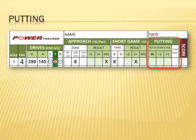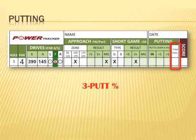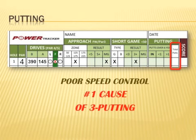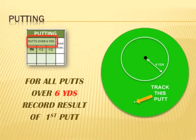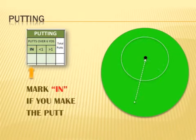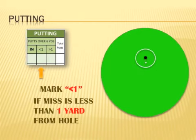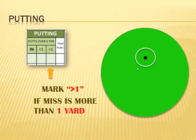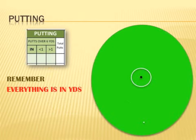Now let's power track our putting. When power tracking you will record total putts so you will know your average putts per round and your 3-putt frequency. The biggest impact putting has on your score is 3-putting, and one of the main causes is poor speed control on long putts. To evaluate speed control, you will track your performance on all putts longer than 6 yards. Mark the in box if you make it, the less-than-1 box if your ball misses but stops less than 1 yard from the hole, or the greater-than-1 box if your ball misses and stops further than 1 yard from the hole. Remember, less than 1 or more than 1 means 1 yard, not feet.